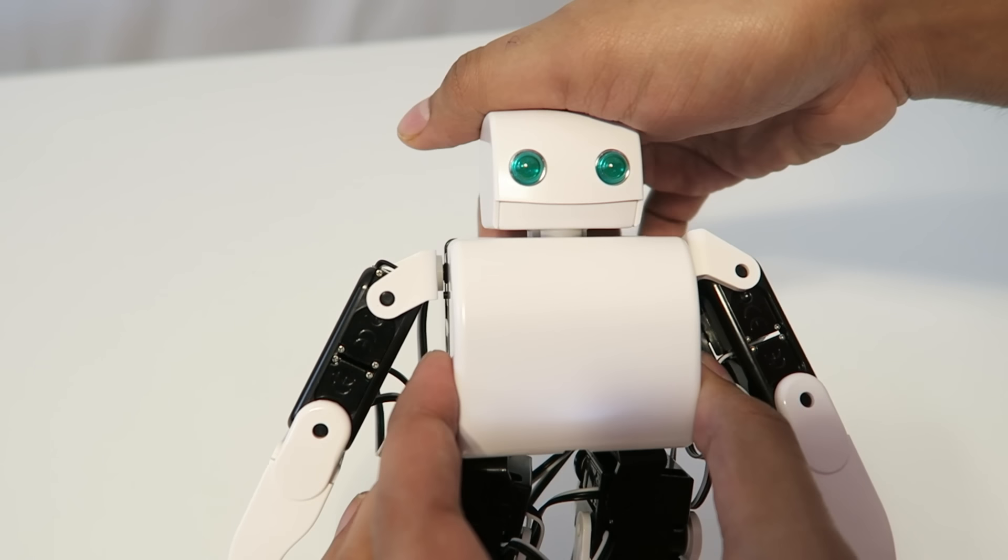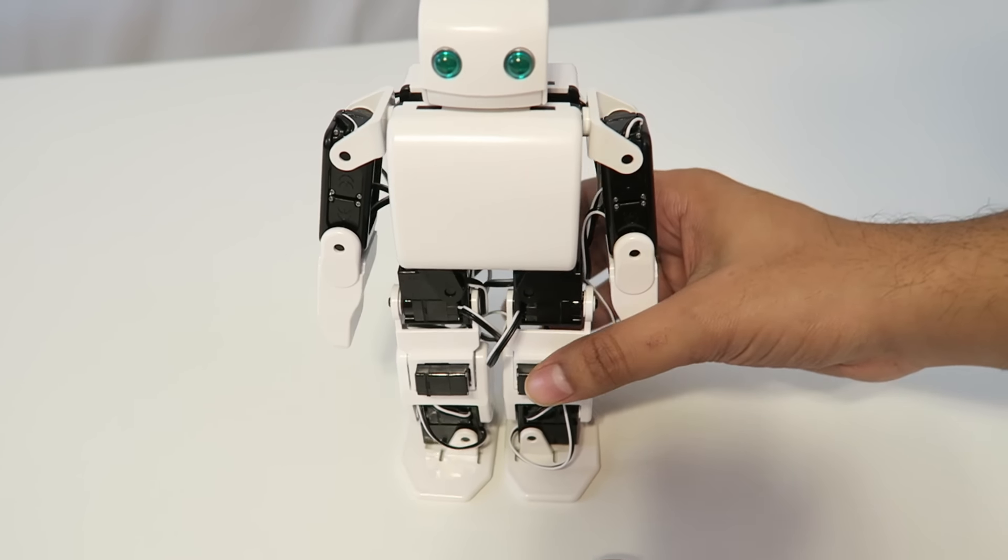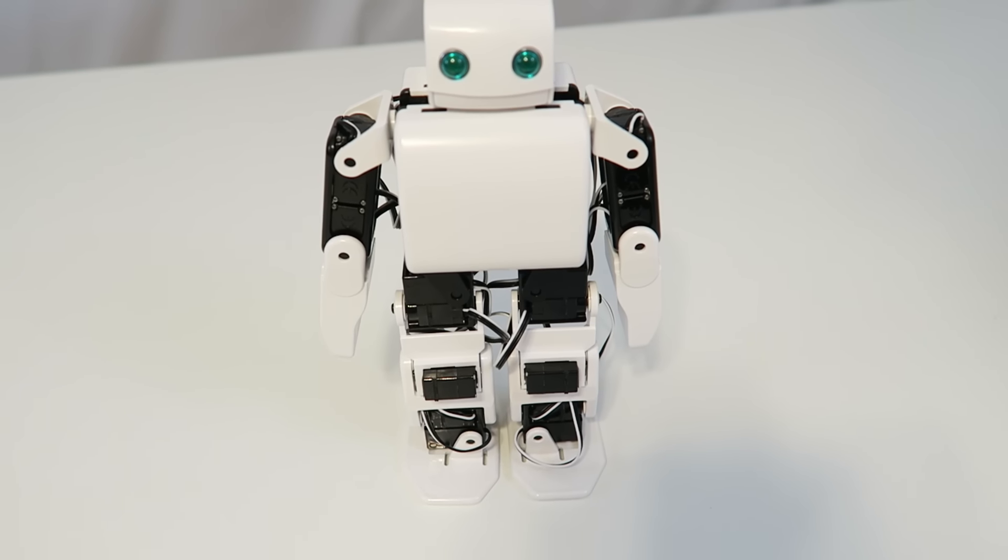So let's go ahead and turn this guy on by switching both of the switches on in the back. And now he's in his ready state mode. And then we'll go ahead and turn on the app itself and take a look at that.